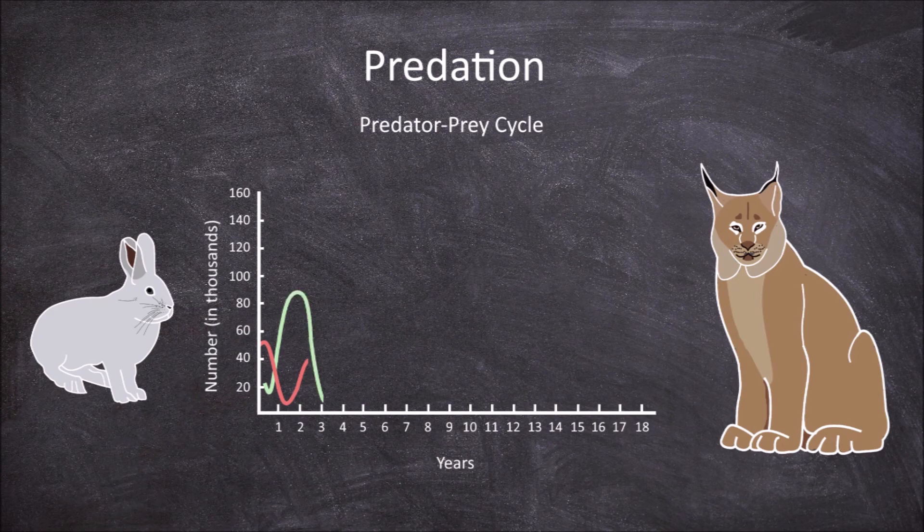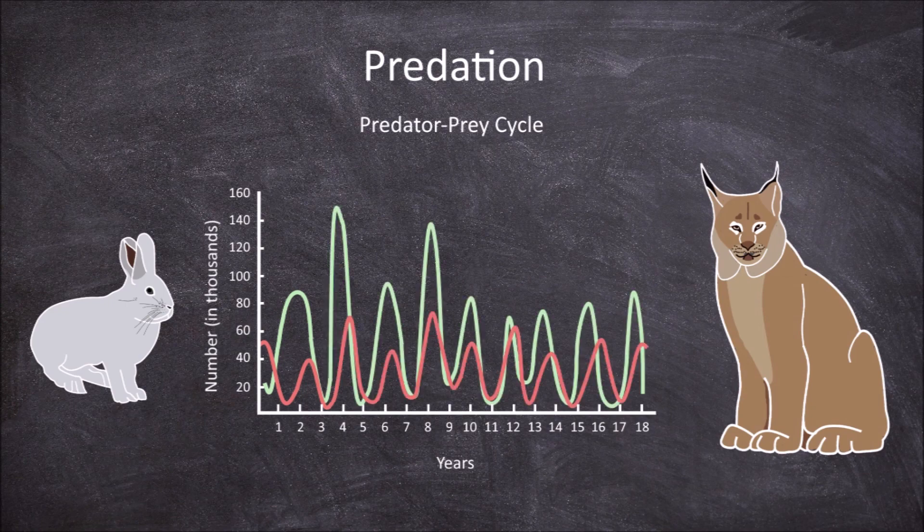With less prey, the lynx population decreases again, and when low, the prey population grows again in a continuing cycle.